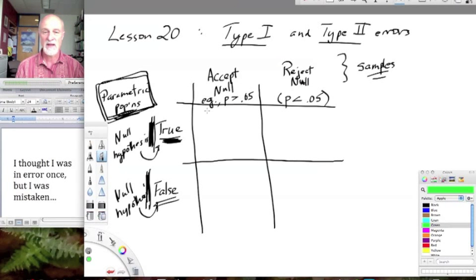Let's take a green pen color here. If the parametric population, the null hypothesis, is actually true, and our statistical test accepts the null, then here we are in this region.